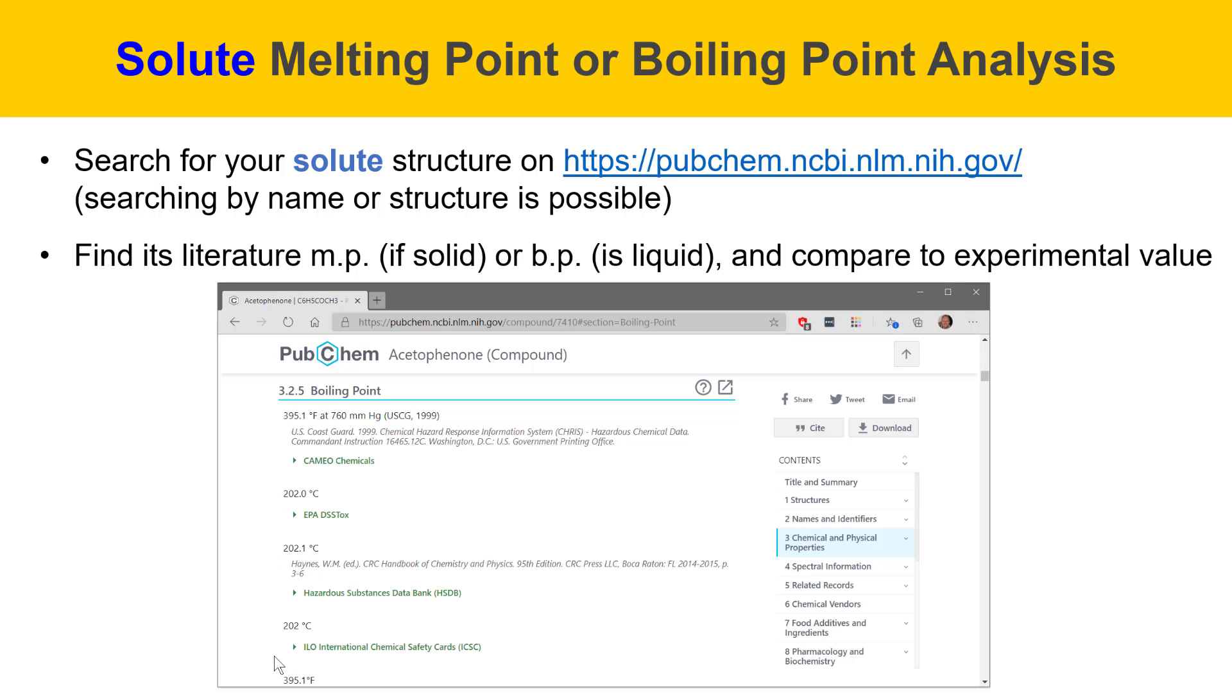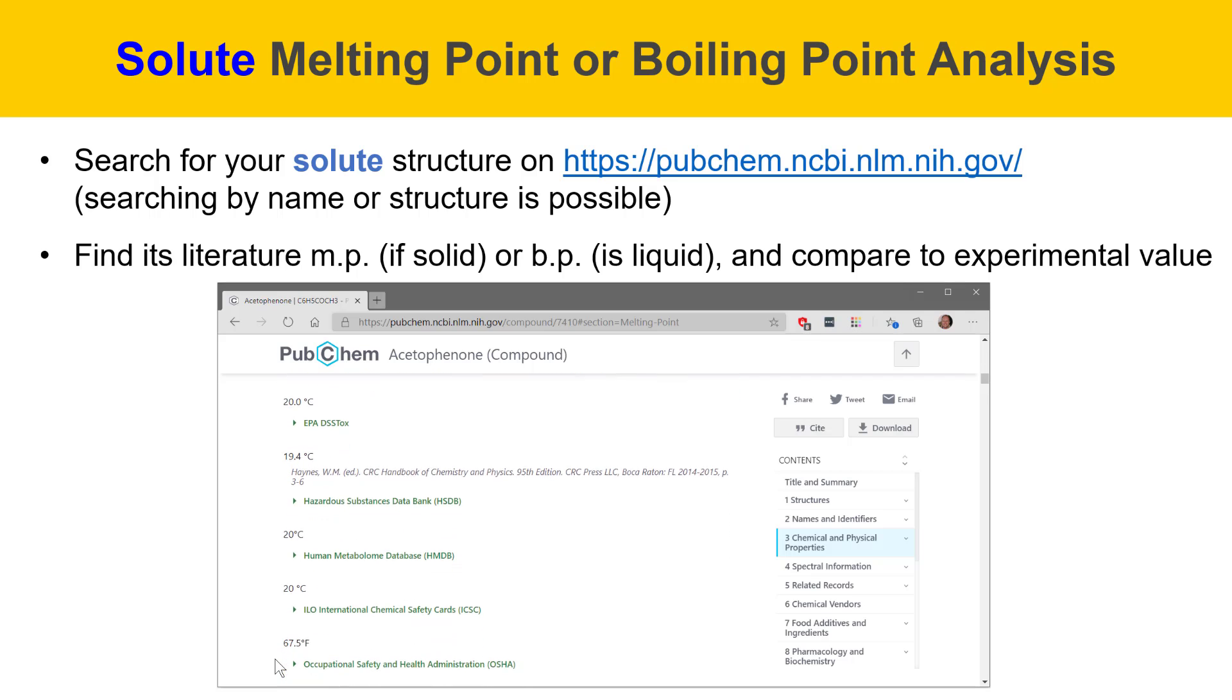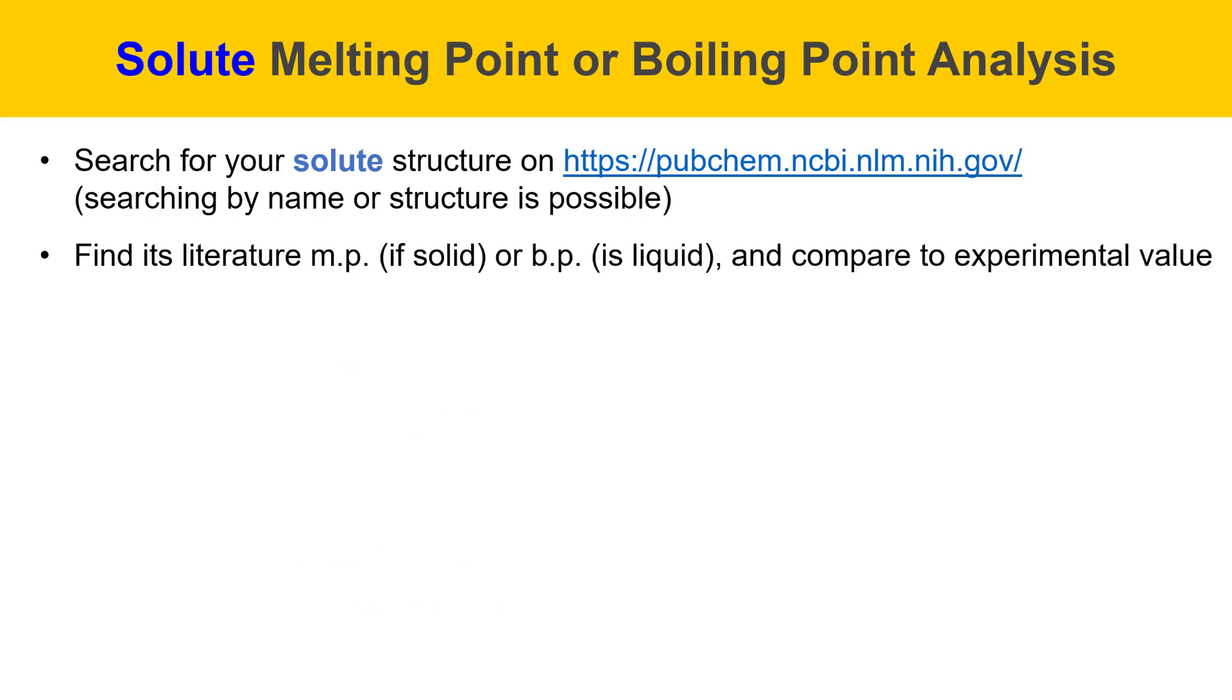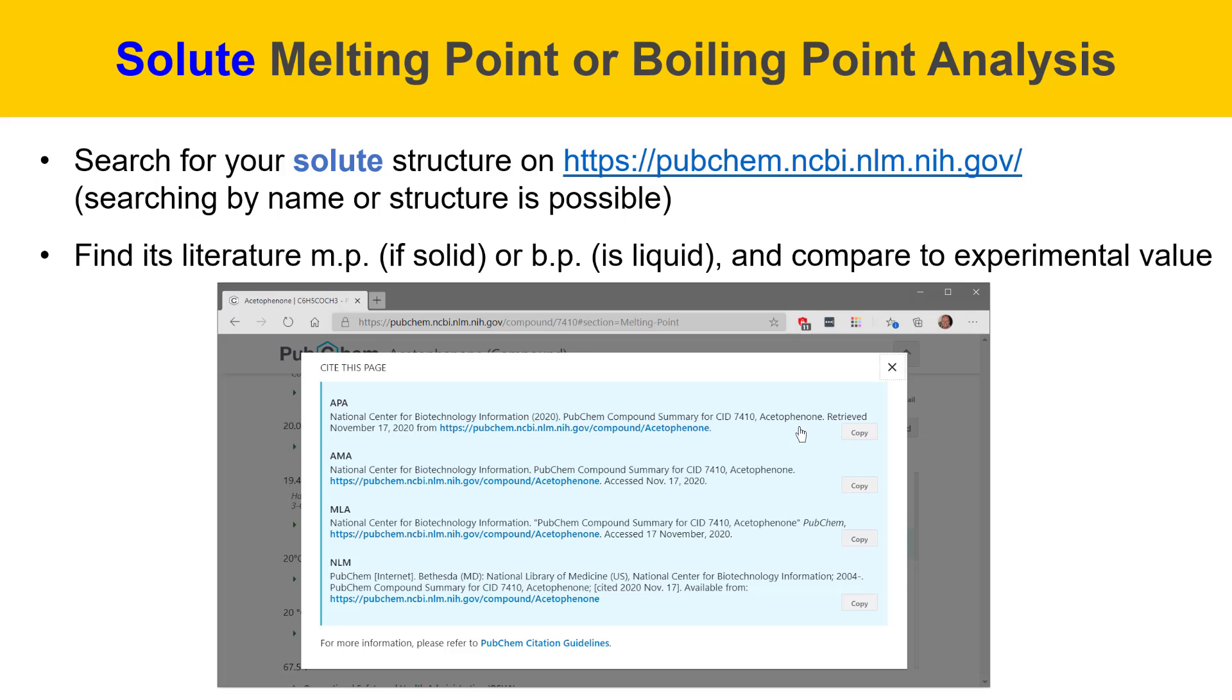Now I'll scroll down to get to melting point data for this molecule acetophenone. There are several entries in several different databases, but they mostly agree with each other and they're around 20 degrees Celsius. Finally, if you want to cite PubChem, you could just click this button and it brings up a whole bunch of different options for citation and different reference styles. I'll click MLA here to copy the MLA formatted reference to the clipboard.